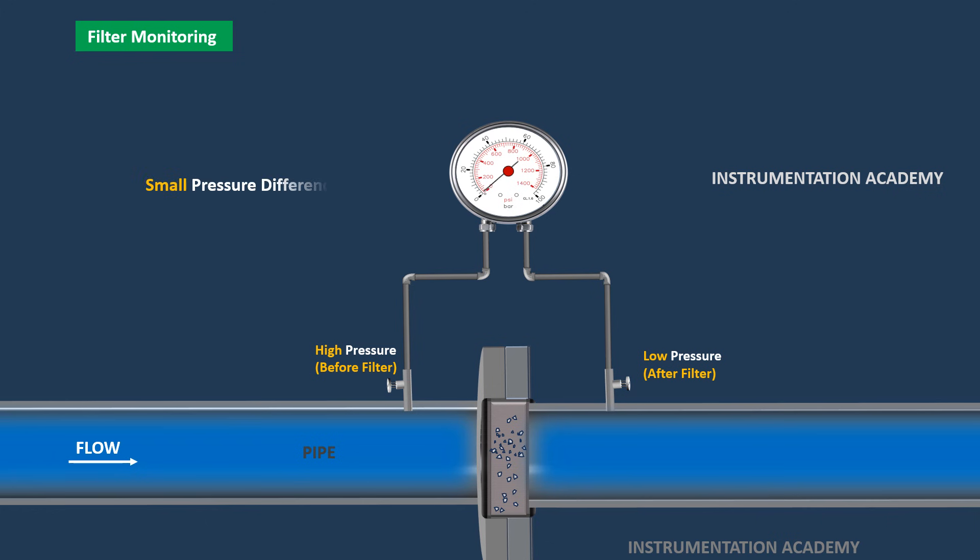When the filter is clean, the pressure difference is small. However, as the filter collects more contaminants, the resistance to flow increases, causing the pressure difference to rise.